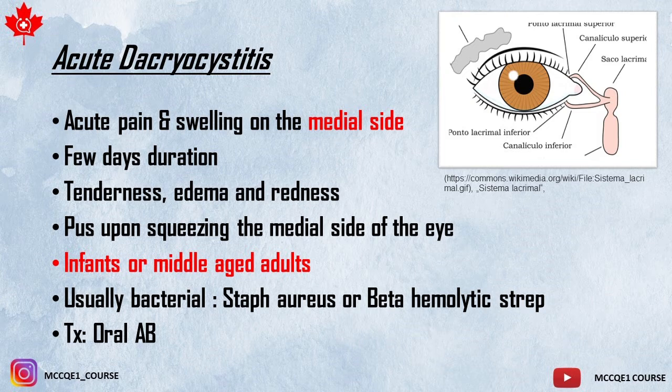It is usually bacterial — Staph aureus or beta-hemolytic streptococcus is the responsible germ. For treatment, you usually need oral antibiotics; topical antibiotics are not enough. What differentiates it from other infections of the eye is pain and swelling on the medial side and pus coming out of the punctum when squeezing.